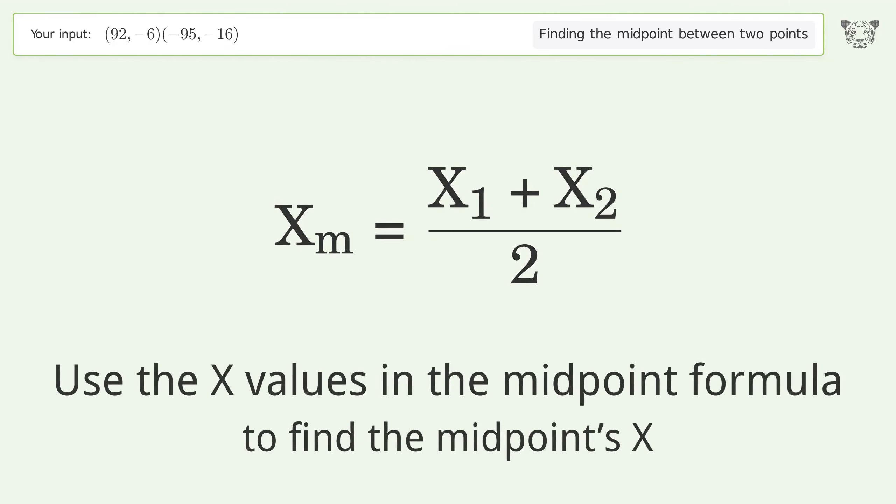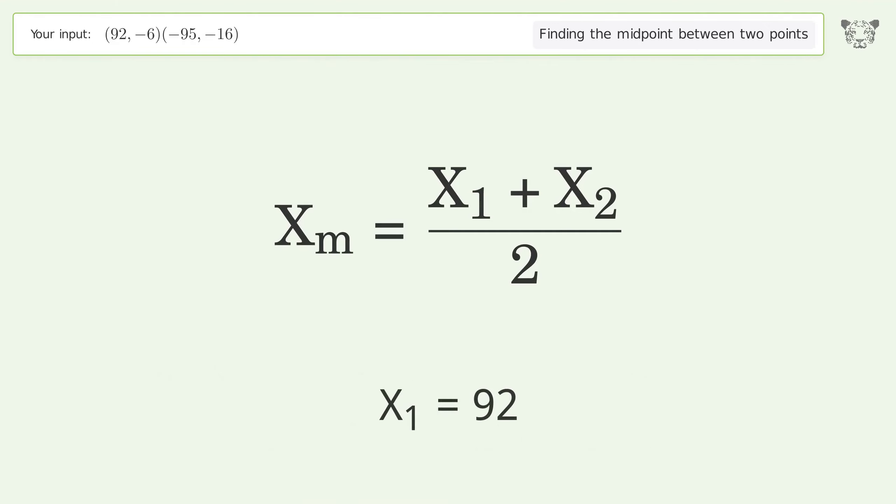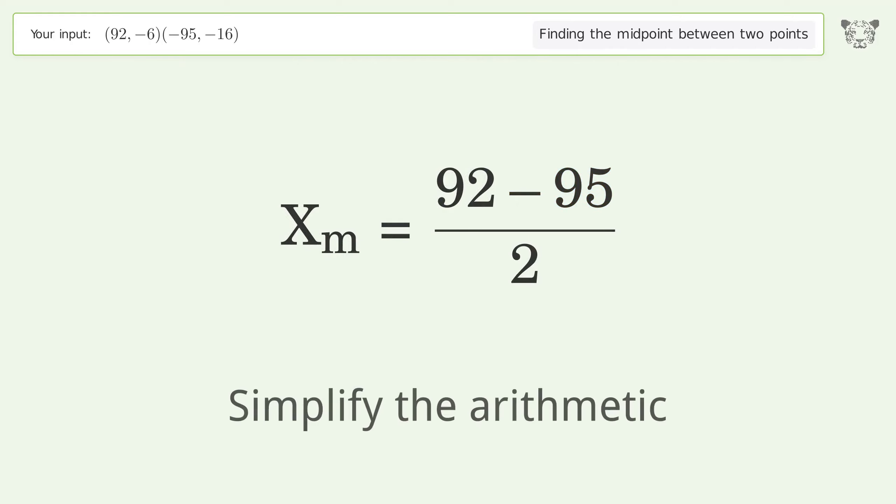Use the x values in the midpoint formula to find the midpoint's x. x1 equals 92, x2 equals negative 95. Simplify the arithmetic.